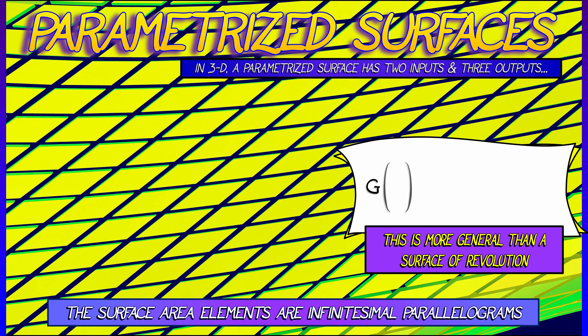Let's say that our surface is parametrized by some function g with two inputs s and t, three outputs x, y, and z.